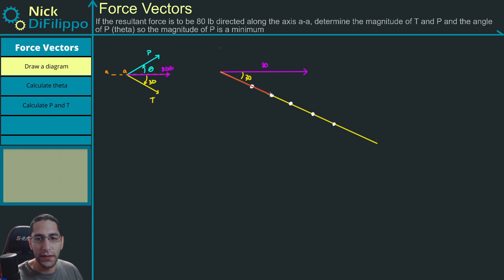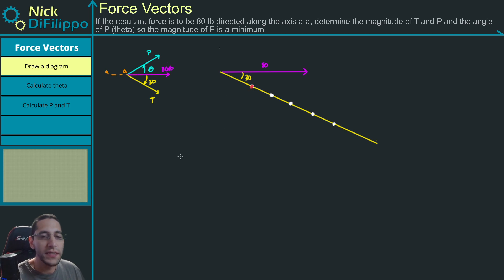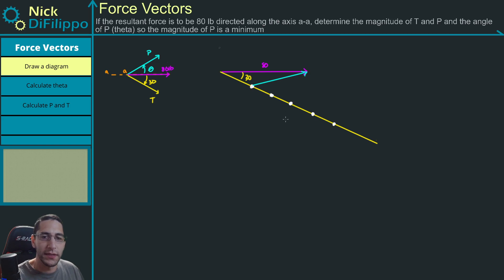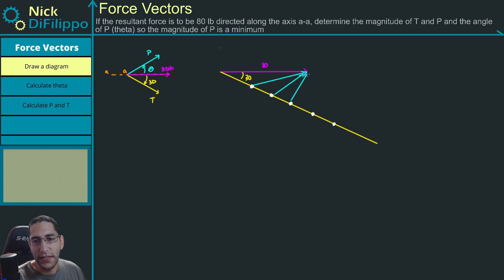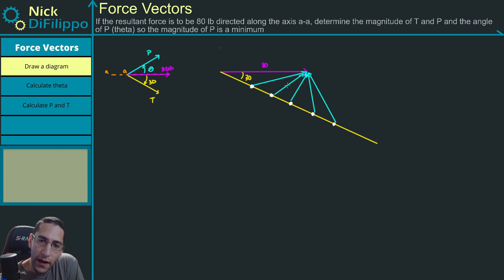Any of these could potentially be what my vector T is. Let's look at one point: if this is the correct point, then P would have to go from that point to the end of my resultant. The same applies for each other point along this line. So we need to figure out which of these lines represents the shortest value of P.